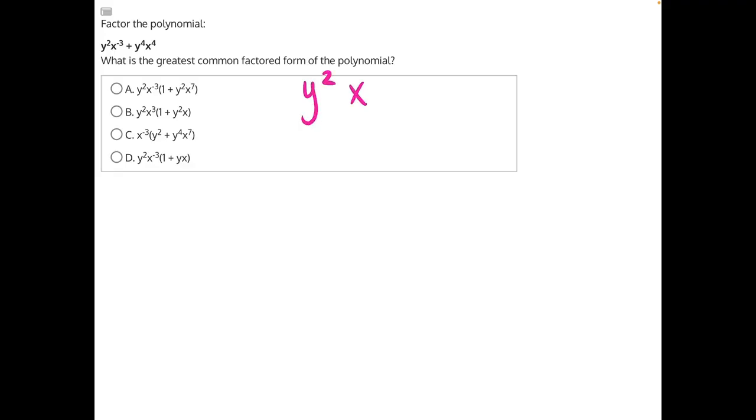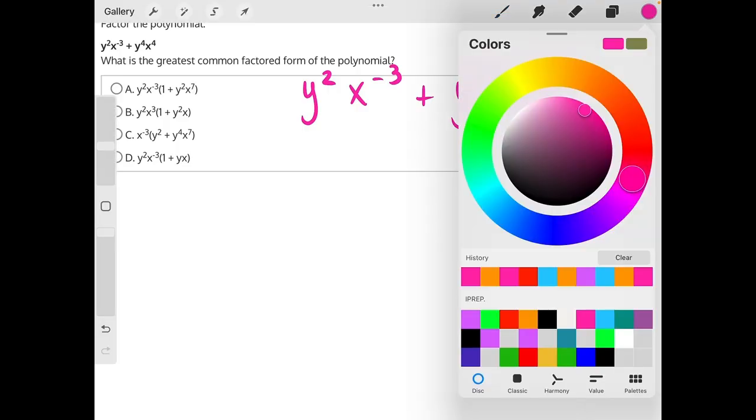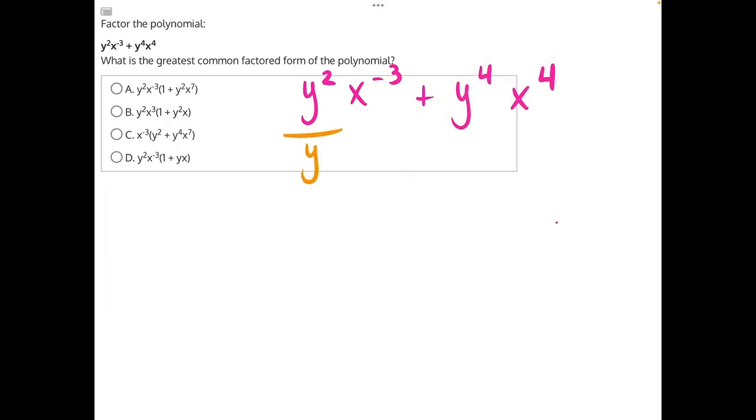y squared, x to the negative third, plus y to the fourth, x to the fourth. So the greatest common factor between our y terms will be y squared.